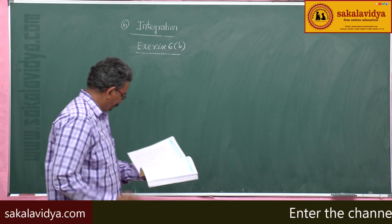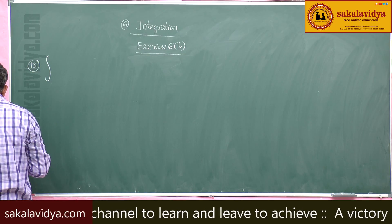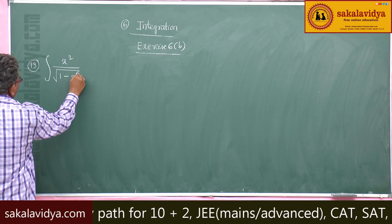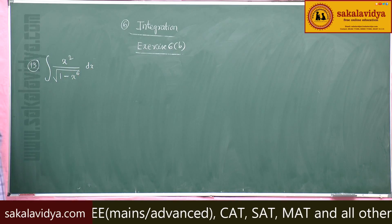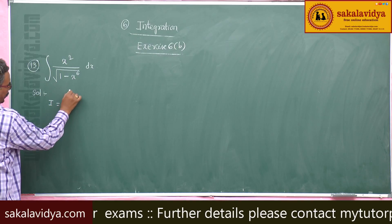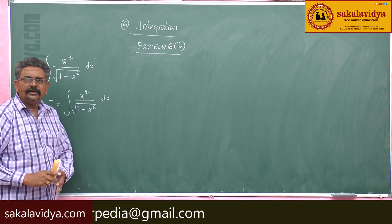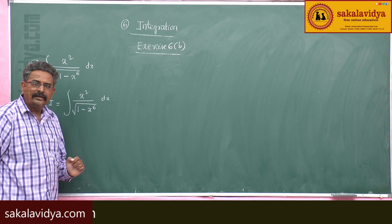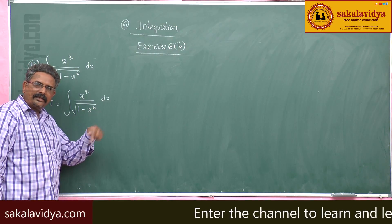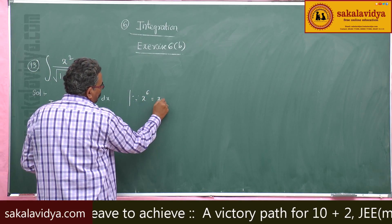Next, thirteenth problem. Evaluate integral of x squared by root over 1 minus x to the power 6 dx. Let i equal to integral x squared by root of 1 minus x to the power of 6 dx. Here x squared is the part of the derivative of x cubed. We can see x to the power 6 can be written as x cubed whole square.